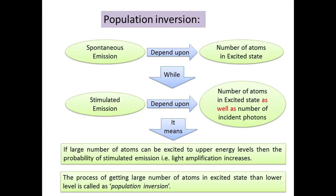Spontaneous emission depends on the number of atoms in the excited state. Since this emission occurs spontaneously, electrons stay for a shorter time — around 10 to the power of minus 8 seconds — and spontaneously return to the ground state. Stimulated emission depends on two factors: first, the number of atoms in the excited state, and second, the number of incident photons.